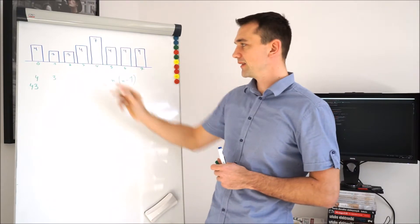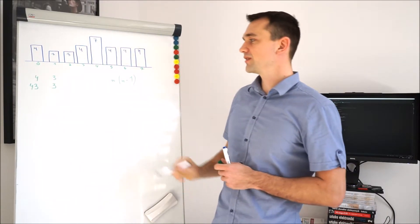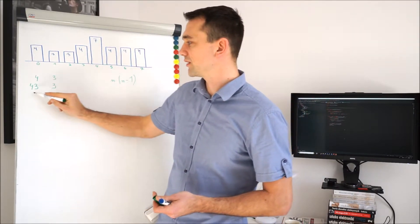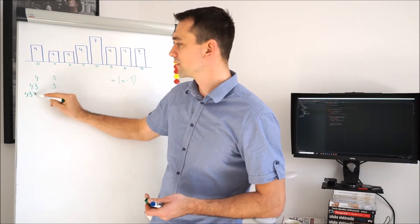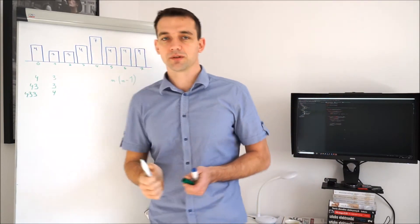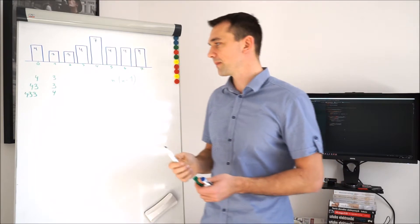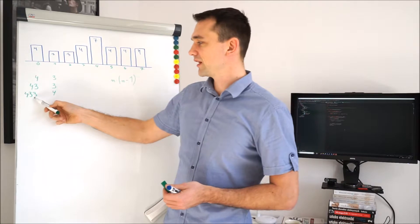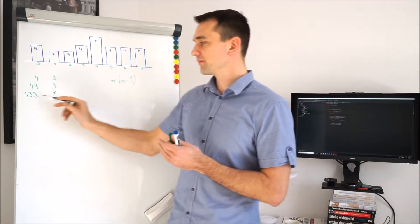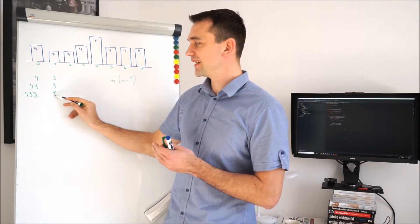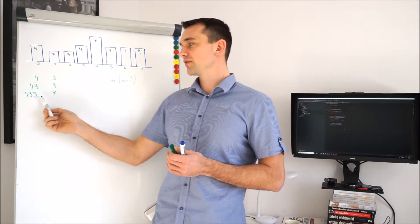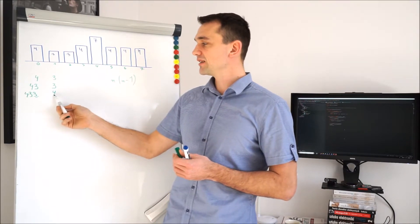The next element at index 2 has height 3. We see it equals our last element on the stack. If it is equal or less, we add it to the stack. The next element, at index 3, has height 4. If the incoming element is higher than the last element on the stack, we have to perform some calculations. We will pop each element from the stack until we find one that is the same height or higher than the one we just encountered.